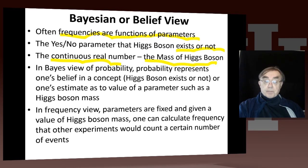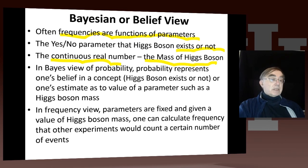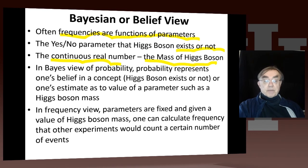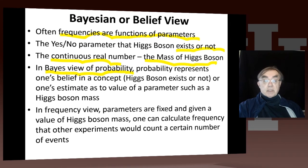In the frequency view, the parameters are fixed. Given the Higgs boson mass, we can calculate the frequency of experiments that count a certain number of events. As we'll see, these are essentially the same mathematically, but conceptually they're pretty different. The frequency view is artificial and less interesting, whereas the Bayes view is critical — this is really what I want. I'm trying to establish whether or not the Higgs boson exists, and if it does, what its parameters are.